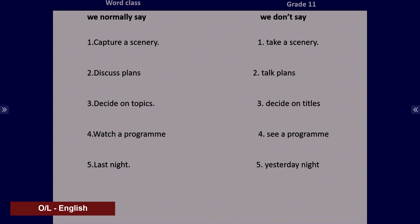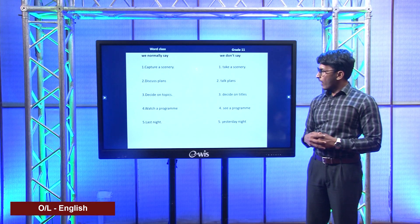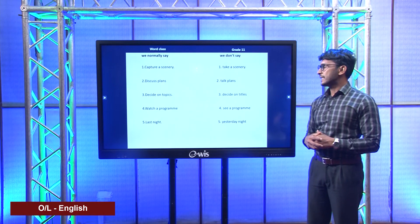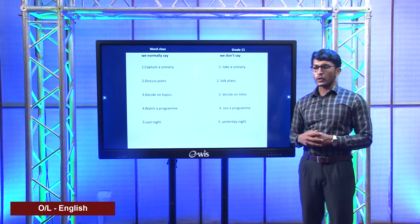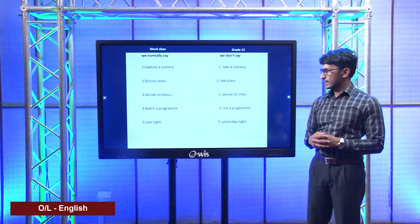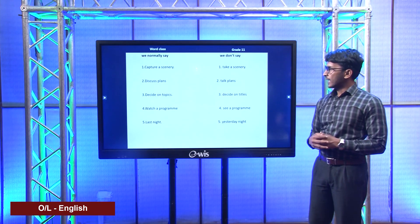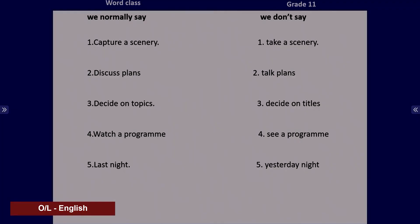We usually say decide on topics, but we don't say decide on titles. What's the difference? A topic is a subject, outline, or theme — you write the topic at the top of your essay or tell your topic when making a speech. A title is the identifying name given to a particular book, movie, play, or musical composition. We usually say watch a program, but not see a program — see means to be aware of what is around you with your eyes, while watch means looking at something intentionally and deliberately. We usually say last night, but not yesterday night.